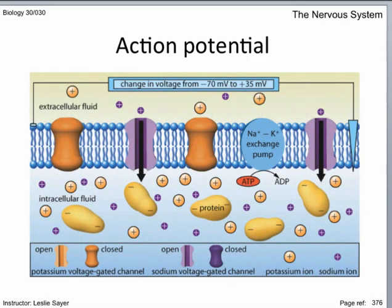The action potential of a neighboring node of Ranvier causes the depolarization. The sodium ion voltage gates open in response and sodium ions rush in, down their concentration gradient, attracted by oppositely charged ions and proteins. The voltage changes to plus 35 millivolts.